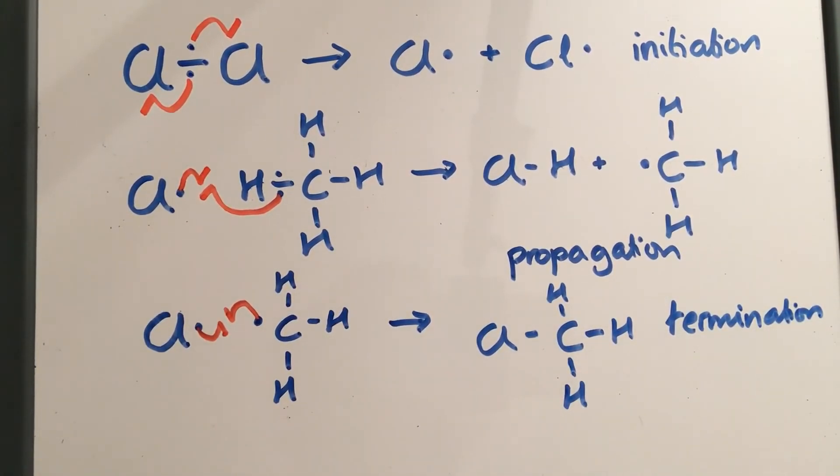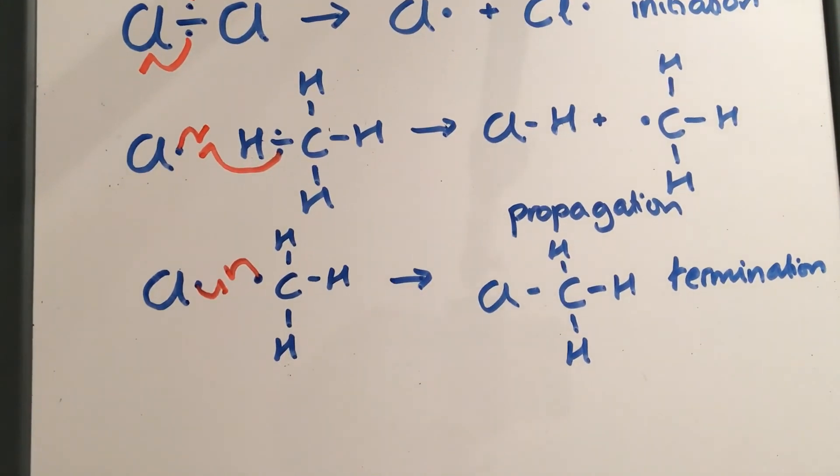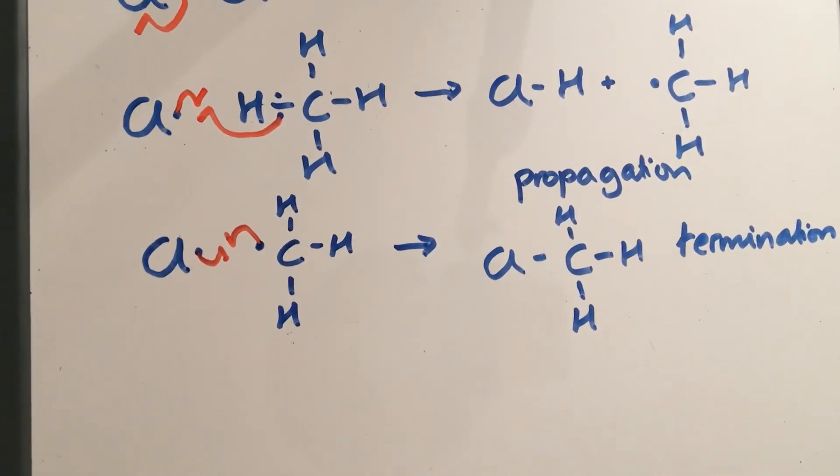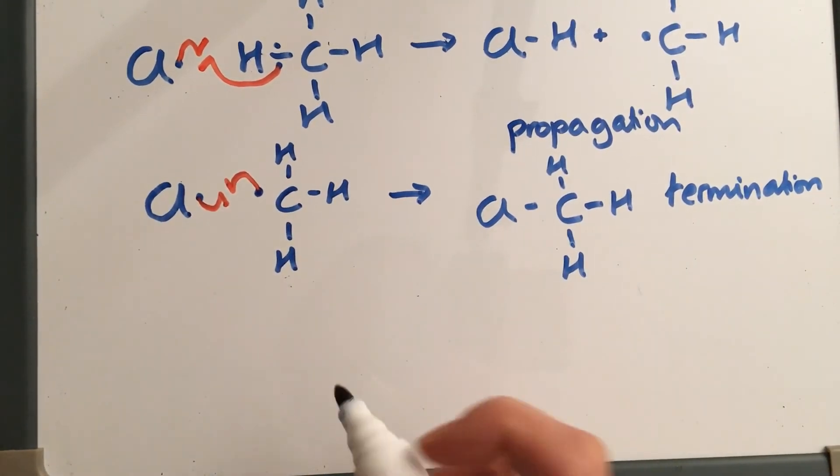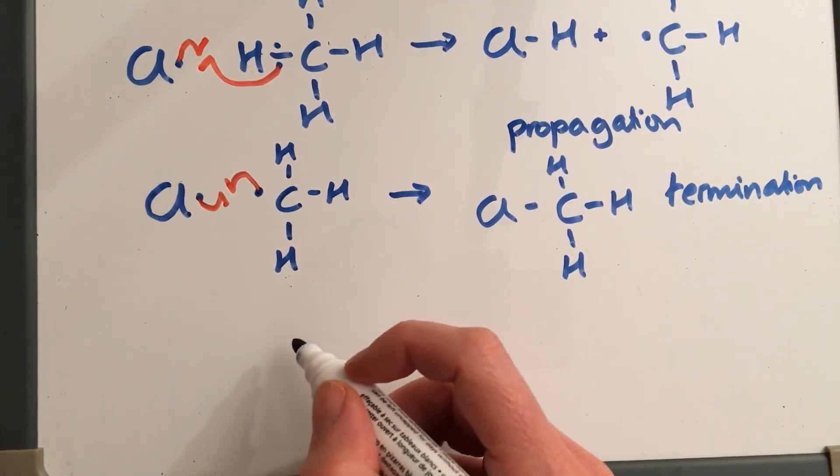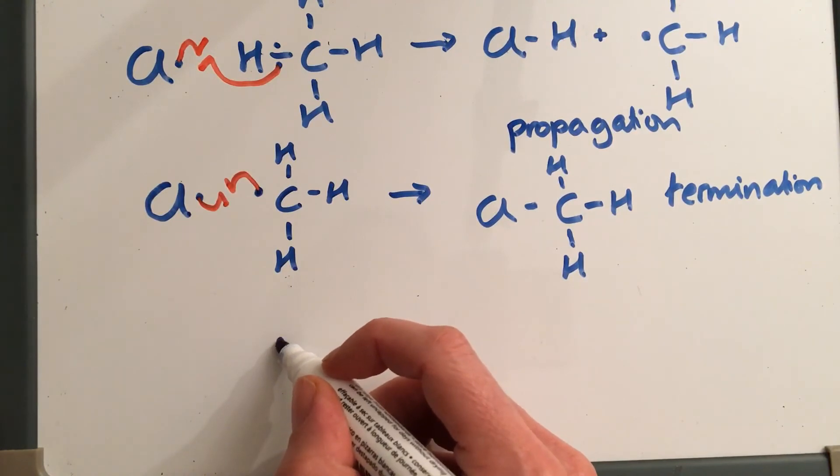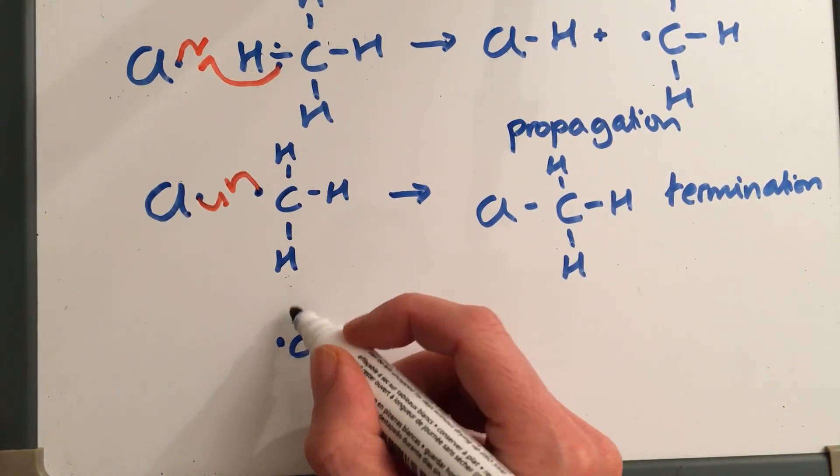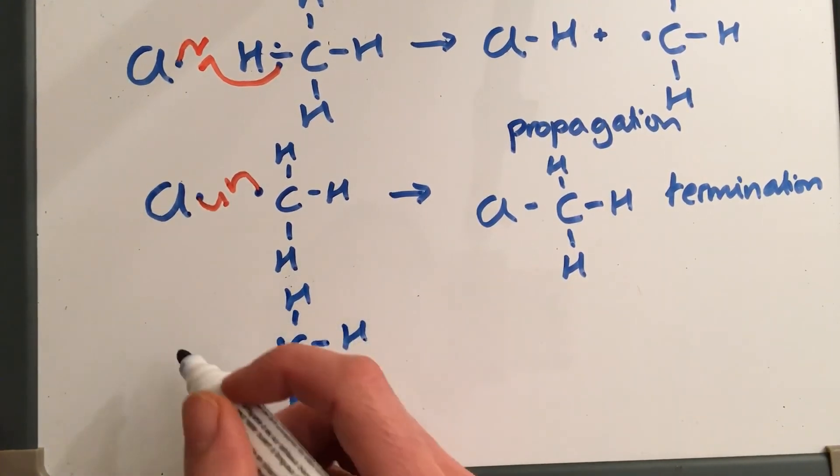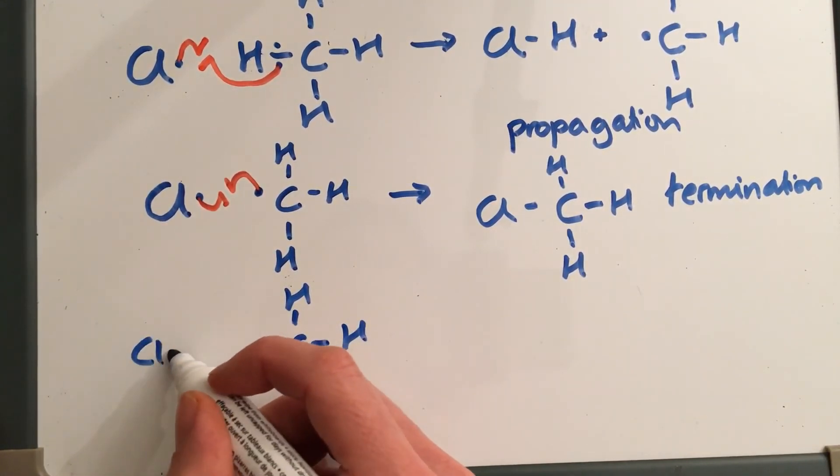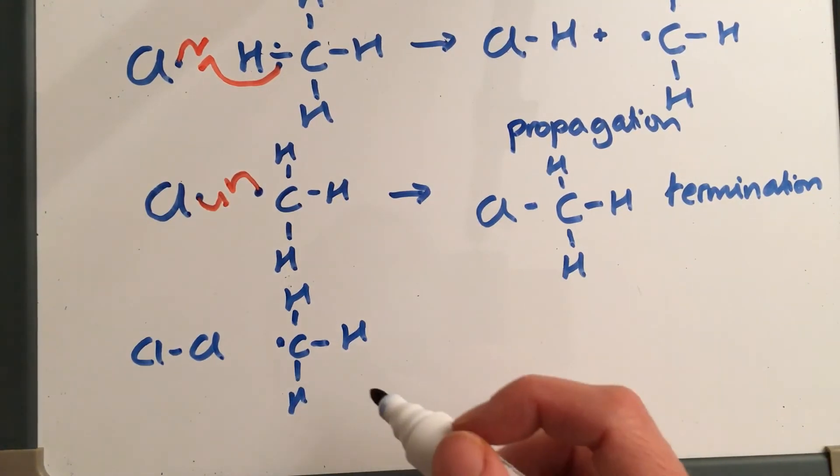You may remember from the previous video that there's another way that you can form chloromethane. And if we stick with our methyl radical, but in this case we react it with a chlorine molecule - so no radical there.